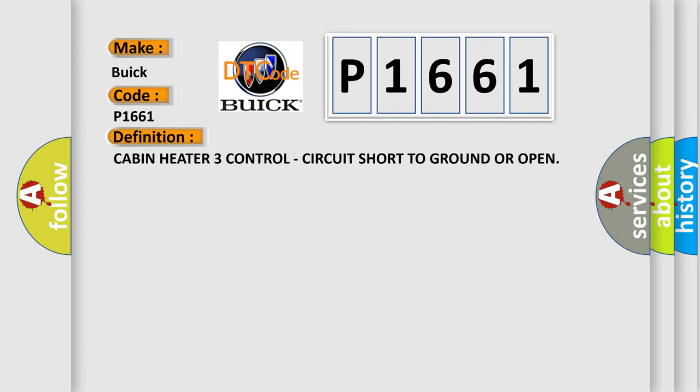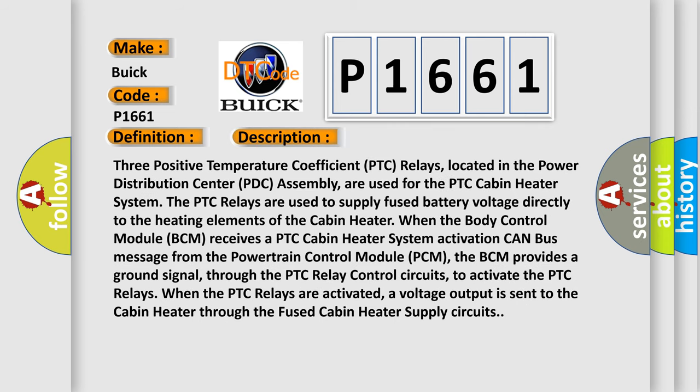Three positive temperature coefficient PTC relays, located in the power distribution center PTC assembly, are used for the PTC cabin heater system. The PTC relays supply fused battery voltage directly to the heating elements of the cabin heater. When the body control module BCM receives a PTC cabin heater system activation CAN bus message from the powertrain control module PCM, the BCM provides a ground signal through the PTC relay control circuits to activate the PTC relays. When the PTC relays are activated, a voltage output is sent to the cabin heater through the fused cabin heater supply circuits.